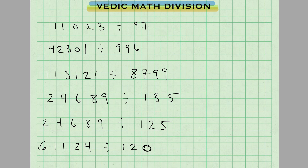Good day. We're going to do some Vedic math division when we're dividing by numbers that are near a base number. What I mean by base number is a one followed by any number of zeros. So 10 is a base number, 100 is a base number, 1000 is a base number, 10,000 is a base number.